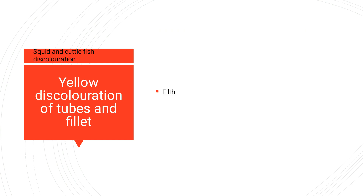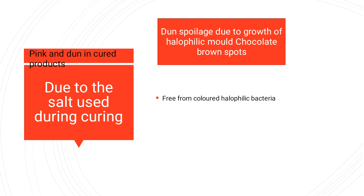Squid and cuttlefish discoloration mainly involves yellow discoloration of tubes and fillets, with filth formation seen over them. Pink or dun discoloration in cured products is caused by the salt used during curing — if the salt is contaminated it will contaminate the whole product. Dun spoilage is due to the growth of halophilic mold, leading to chocolate brown spot formation, and is free from colored halophilic bacteria.